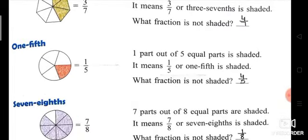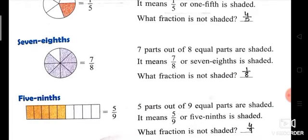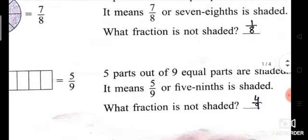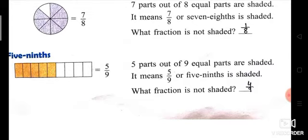Next, one-fifth means out of five one will be shaded, so one-fifth is shaded and four-fifth is not shaded. Seven-eighth means seven parts out of eight are shaded, so seven-eighth is shaded and one upon eight is not shaded. Five-ninth means total parts are nine, five parts out of nine are shaded, so five-ninth is shaded. Count the unshaded: one, two, three, four — four parts are not shaded, so four upon nine is not shaded.